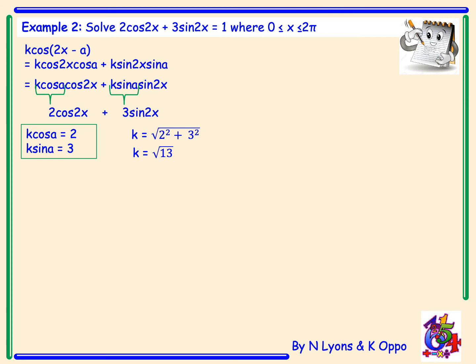Once we've got k the other thing we need to find is the value for A, and remember this has to be in radians. So we draw out our cast diagram and again cos A is equal to a positive value so we're going to tick A and C. Sin A is also positive so we'll tick S and A. So here we're looking for an angle in our first quadrant. Now writing out our rule to find our angle, tan A is equal to k sin A over k cos A. Tan A equals 3 over 2.